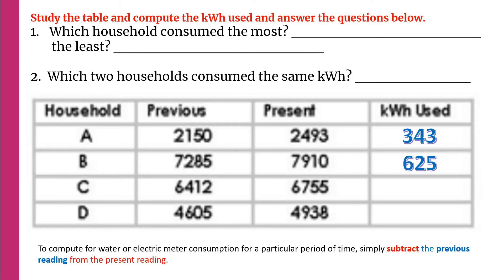Household B gives us 625 kilowatt hours — that is from 7910 minus 7285. Household C gives us 343 kilowatt hours, from 6755 minus 6412. And Household D, from 4938 minus 4605, gives a difference of 333. With this, we can now complete the table and answer the questions above.